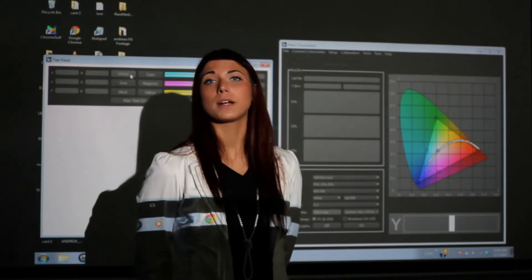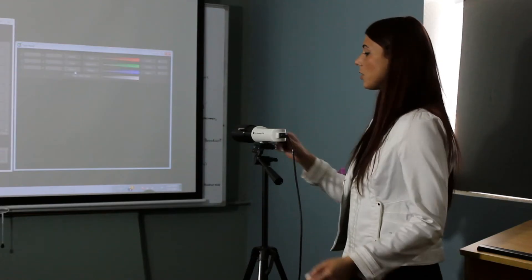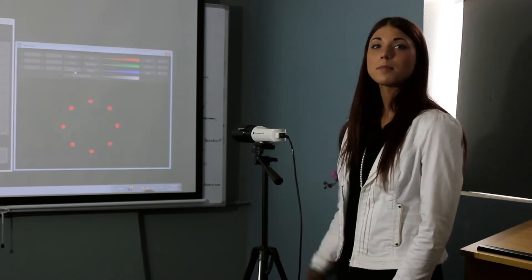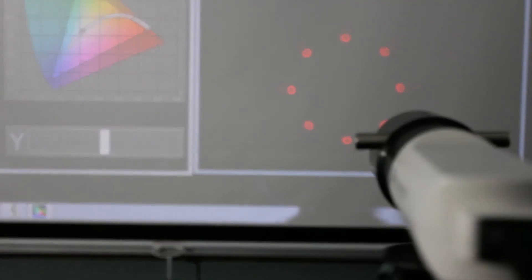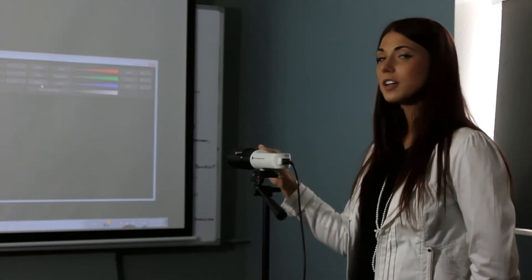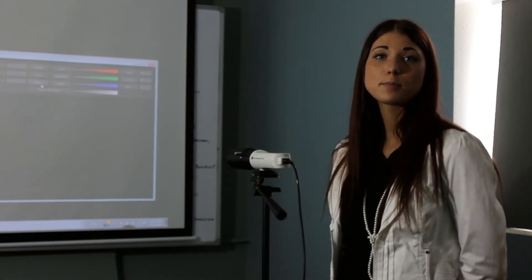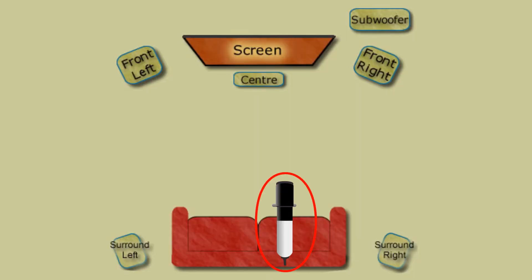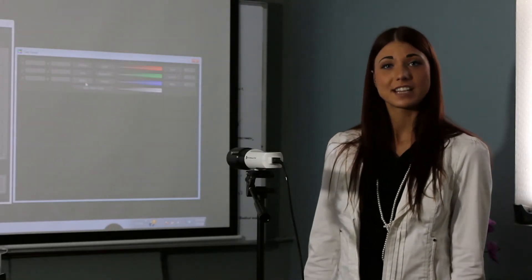Projectors can also be calibrated with the K10A. You can use the aiming lights to determine the measured area of the screen, although you may need to dim the projector in order to see them. Make sure your aiming lights are turned off before you measure, no matter what kind of display you are using. The ideal position for your K10A is going to be from where your viewers are sitting.